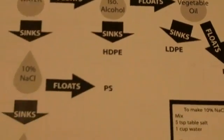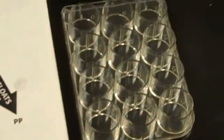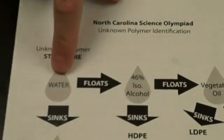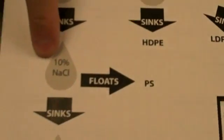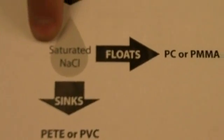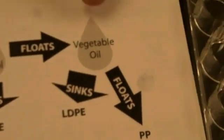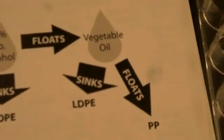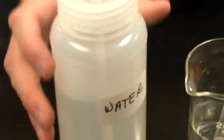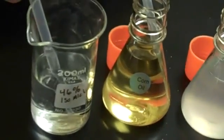What we're going to do is set up our vials here with certain substances. As you can see on the chart, we're going to use water, 10% sodium chloride, saturated sodium chloride, 46% isopropyl alcohol, and vegetable oil. We have these set out, and we're going to set it up just like we have it on our chart. So right here we're going to put water, and here is our 46% isopropyl alcohol.